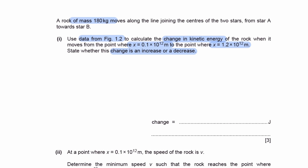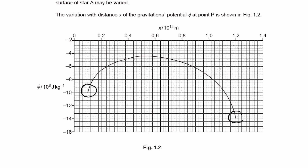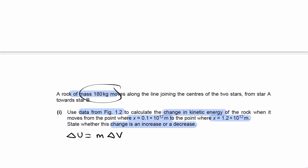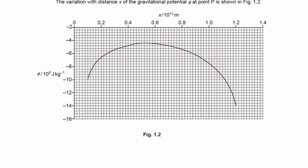To work out whether there is an increase or a decrease in gravitational potential energy: the change in potential energy equals the mass of the object multiplied by the change in potential between the two points. So looking at the diagram, we're going from this point to this point. At 0.1 × 10¹², the gravitational potential is −10, and at 1.2 × 10¹², the gravitational potential is −14.